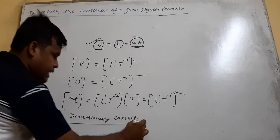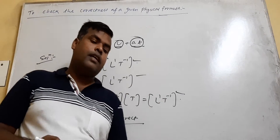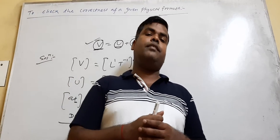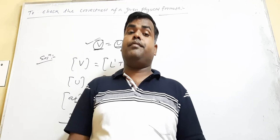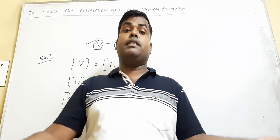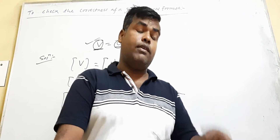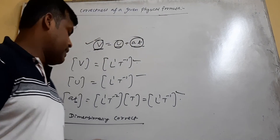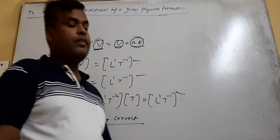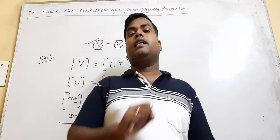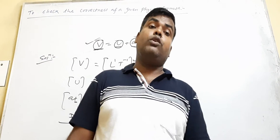Why do we write 'dimensionally correct' and not 'the formula is correct'? Because if it is dimensionally correct, there may still be a chance it is incorrect — that is one of the limitations. Dimensional analysis cannot give any information about numerical values. But if it is dimensionally incorrect, then you can write the formula is incorrect or wrong, because there is no chance for it to be correct.